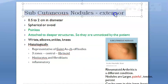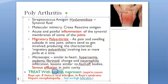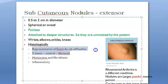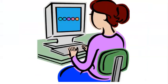Regarding Reye's syndrome: it can be caused by aspirin, so that should be kept in mind. Naproxen can also be used. Subcutaneous nodules are painless — patients often don't even notice them. Histologically, giant Aschoff bodies are seen in the nodules.